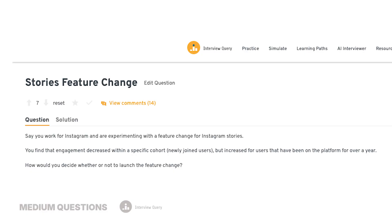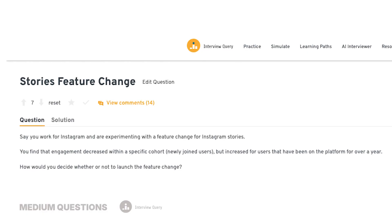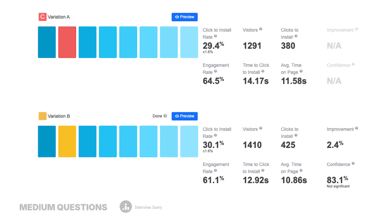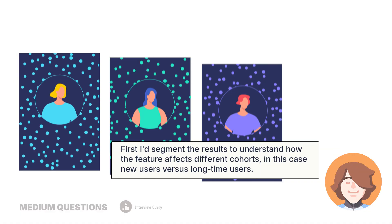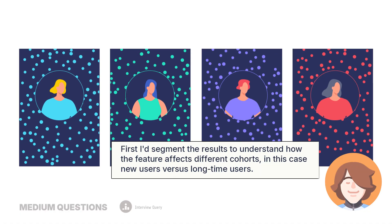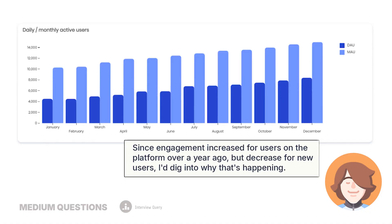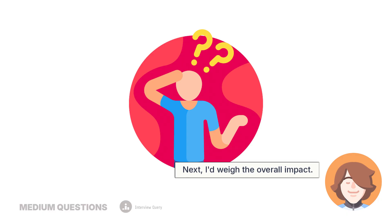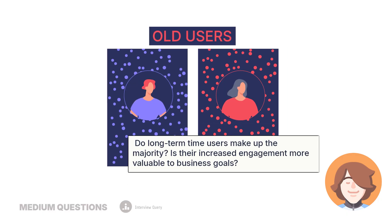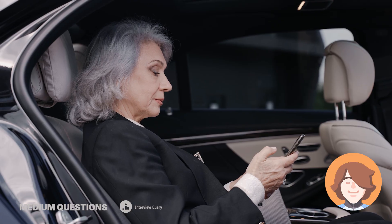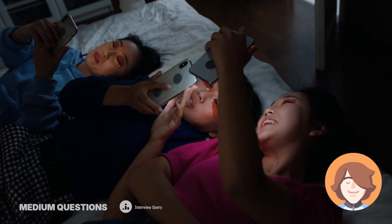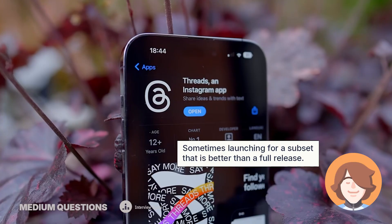Medium-level questions generally appear later in the interview process and are pretty common in data science and data analytics roles. We also have to think through trade-offs, clarify assumptions, and all that. For example: how would you decide whether to launch a feature if it helps some users but hurts others? First, I'd segment the results to understand how the feature affects different cohorts — new users versus long-time users. Since engagement increased for users on the platform over a year but decreased for new users, I'd dig into why. Are new users confused? Does the feature assume familiarity? Next, I'd weigh the overall impact — do long-time users make up the majority? I'd also consider alternatives like a targeted rollout. The key is balancing global metrics with cohort-level insights; sometimes launching for a subset is better than a full release.